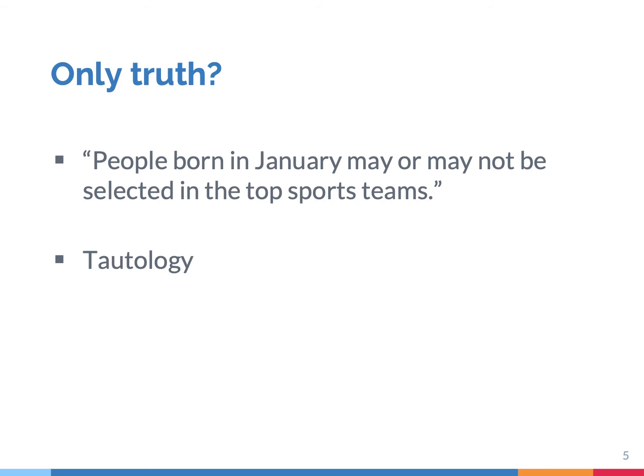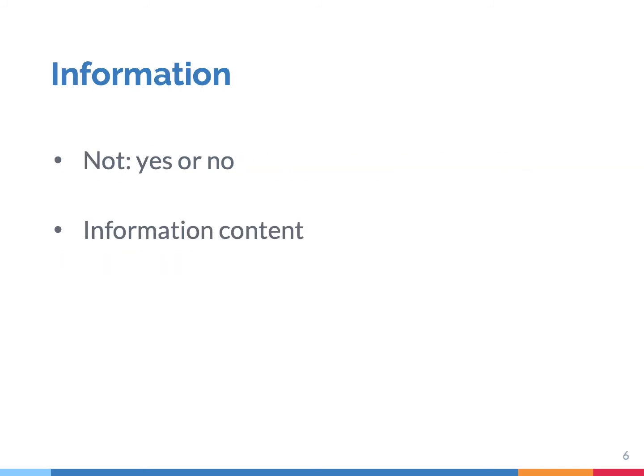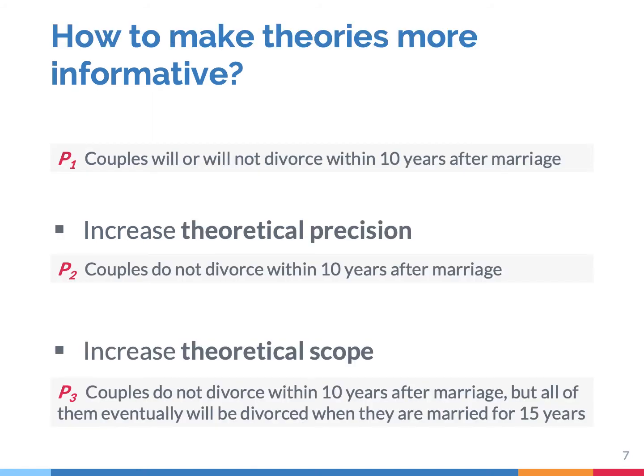The theoretical statement — 'people born in January may or may not be selected in a top sports team' — is not at all informative. Scientists are interested in theories that are not only true but also informative. Hence, it's also important to look at information. Information is not a matter of yes or no; it's also a matter of degree. Scientists say that the higher the information content of a theory, the more useful that theory is. So what are informative theories, and how do you make theories more informative?